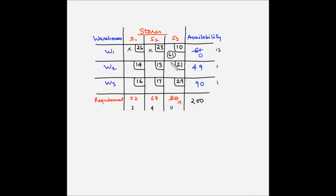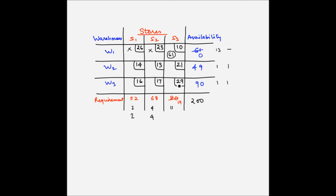Now we redetermine the row and column differences. We skip the first row as it is fully allocated. For the second row, penalty is 14 minus 13 = 1. For the third row, penalty is 17 minus 16 = 1. For the first column, penalty is 2. For the second column, 17 minus 13 = 4. For the third column, the lowest is now 21 and the next lowest is 29, so the penalty is 29 minus 21 = 8. S3 column has the largest difference of 8.